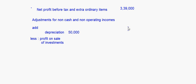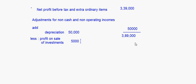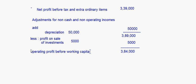When you add 50,000 to 3,49,000 it becomes 3,89,000. Less 5,000 profit on sale of investments - deducting 5,000 gives you 3,84,000. This 3,84,000 is your operating profit before working capital changes.